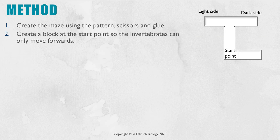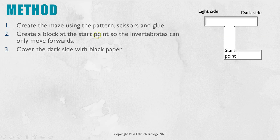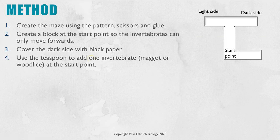For the method, step one: create your maze, then add black paper to the dark side to block out the light. Step two: this particular maze can be used for other experiments, but for the one we're doing here — just going light or dark side — you need to insert the block at the relevant point so that section of the maze isn't in use. Alternatively, if you are just going to do this method, you can create a maze that doesn't have that section. That's the maze all set up.